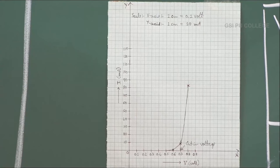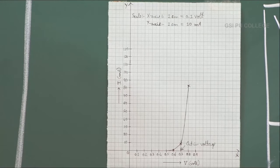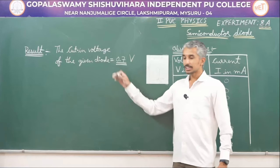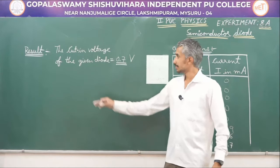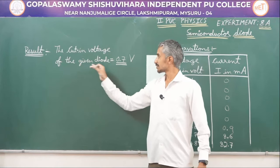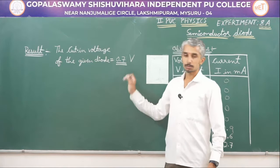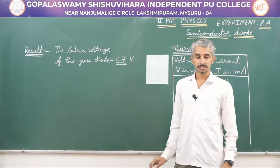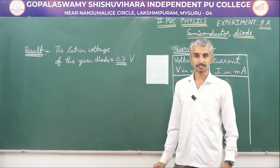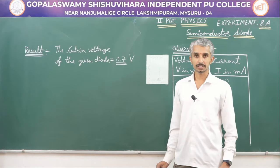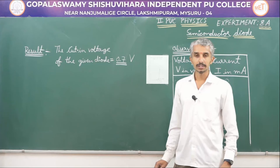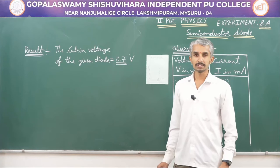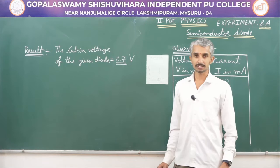We are left with noting down the result. The cut-in voltage of the given diode is 0.7 volts. We have successfully completed part A of the semiconductor diode experiment — the diode in forward bias. In part B, we will look into the diode in reverse bias. Thank you.